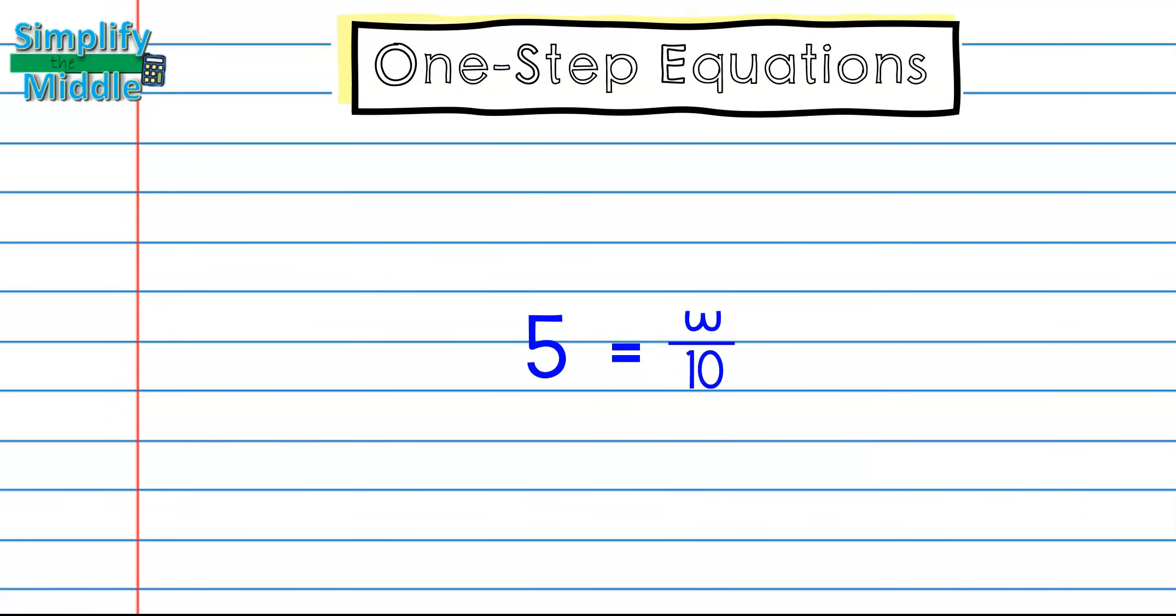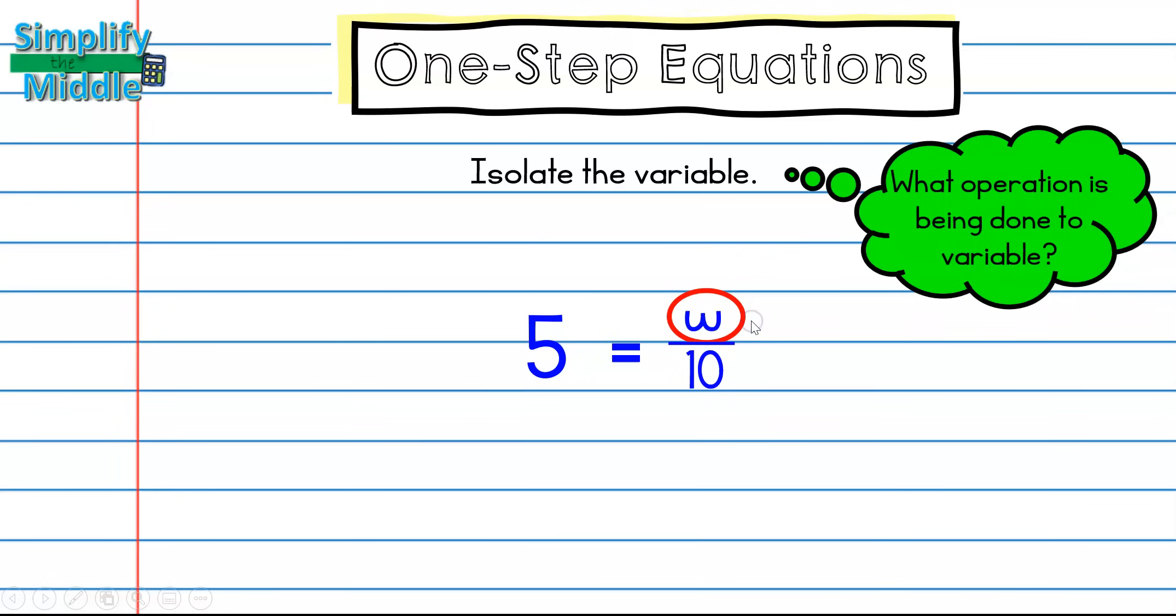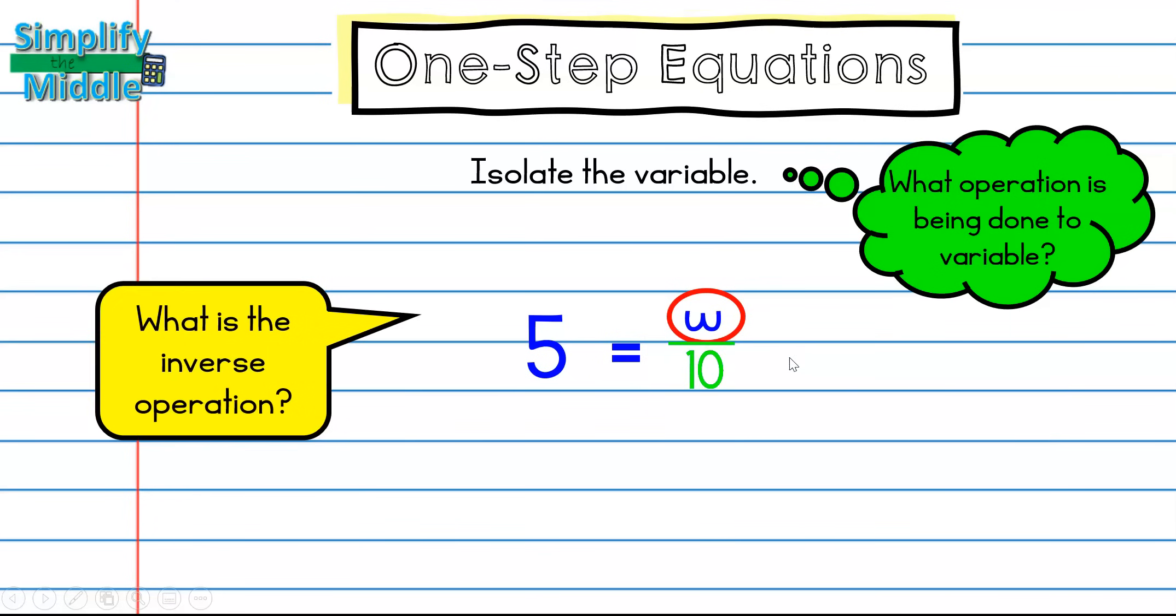For our last example, we have 5 equals w over 10. I'll still isolate the variable, and the variable is on this side this time, by asking what operation is being done to it. Well, we just showed that a fraction bar is division in our last problem. So it's going to be w is being divided by 10. So what's the inverse of division by 10?